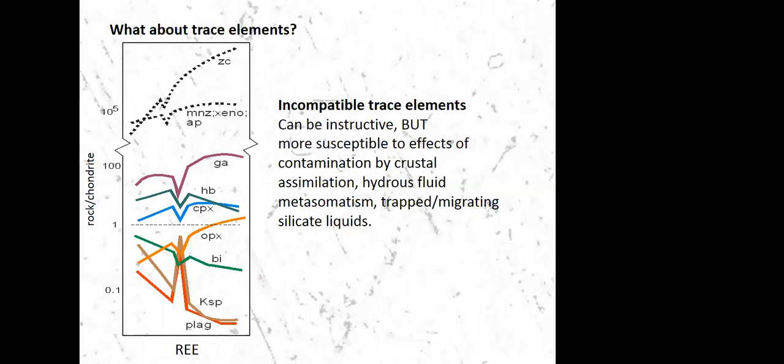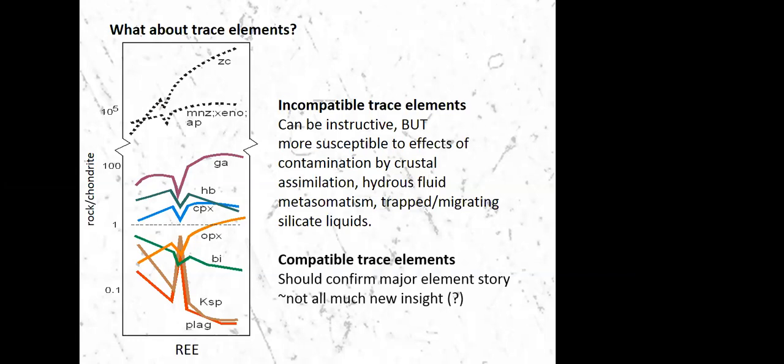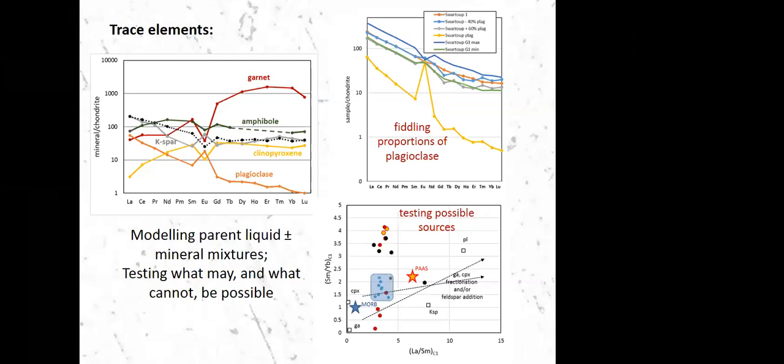Depending on what incompatible trace elements we choose, hydrous fluids and metasomatic processes can influence them. So the large ion lithophile elements, the first column or two in the periodic table, we want to stay away from if we think hydrothermal or hydrated fluid effects are important. Compatible elements are going to pretty much tell us the same thing that the major elements told us. So there's not a lot of benefit from investigating them from a modeling perspective here. So let's look at how we can use trace elements. I'm going to show you a couple of examples from recent work I've been doing on granites. Principles are the same as in mafic rocks. But my best illustrations of mafic rock studies are from my PhD. And unfortunately, that's essentially chiseled into stone and I can't easily access that data to quickly prepare slides from it at the moment.